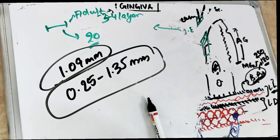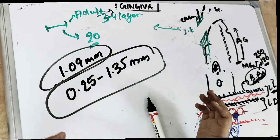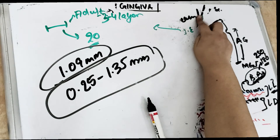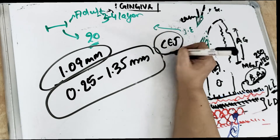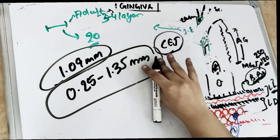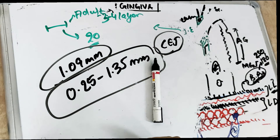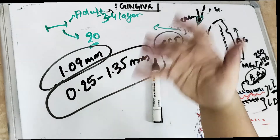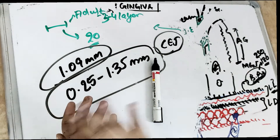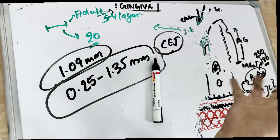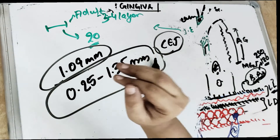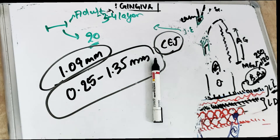When there is a pocket, the junctional epithelium migrates apically towards the root. When the tooth is erupting, the junctional epithelium is at the enamel, going apically during eruption. Once the tooth is fully erupted, it is at the cementum or at the CEJ. But as age progresses, there is attrition of the teeth — the teeth reduce from the incisal or occlusal areas. In case of attrition or tooth wear, the junctional epithelium starts migrating down apically.